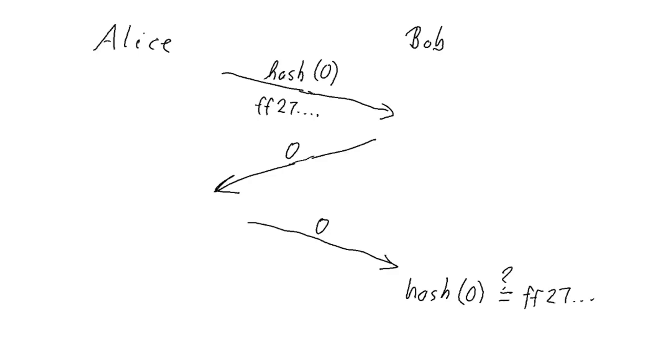And if it is, then he knows that Alice is not lying and that she indeed picked zero and that he lost. But if this hash doesn't match up, then he knows she's cheating or trying to cheat and he would win. And of course, if Alice instead picked one that would work exactly the same, except that the hash would be different.